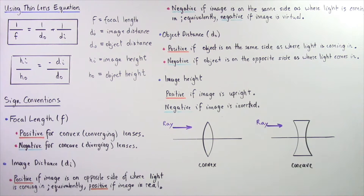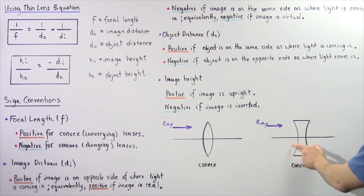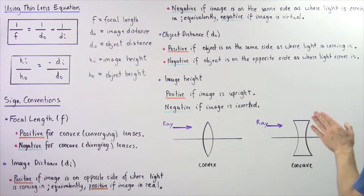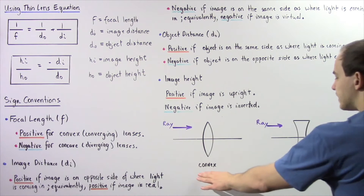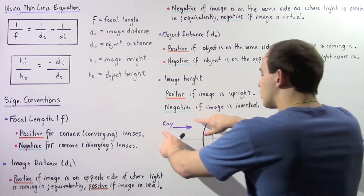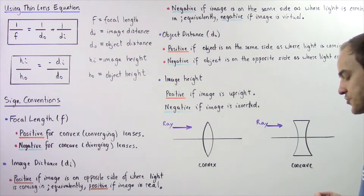A concave lens is always thinner at the middle and thicker at the edges. When rays of light come in from the left side of a concave lens, the rays of light will be diverged. So we have a convex or converging lens and a concave or diverging lens. We will always assume that the rays of light are coming in from the left side of our lens.